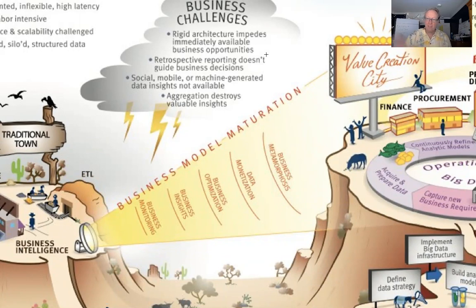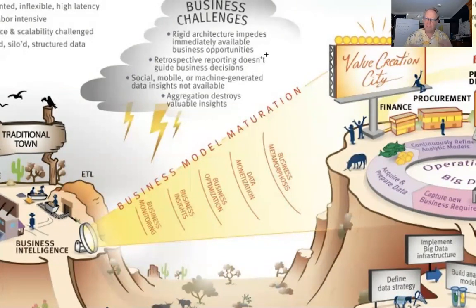You can see the five stages: business monitoring, business insights, and business optimization — which are still the same today. Data monetization, which I now call insights monetization, because it's not about the data we monetize, it's actually about the insights. And business metamorphosis has essentially been replaced by the term digital transformation.